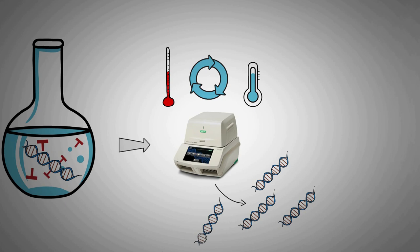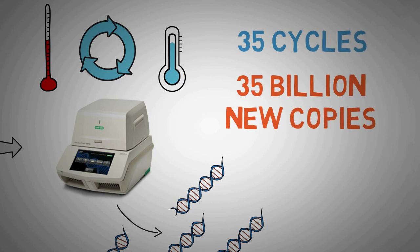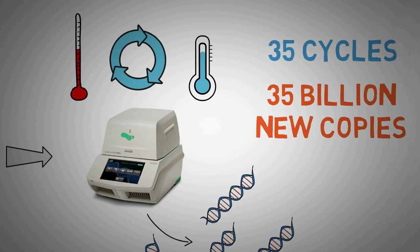Two copies become four, four copies become eight, and so on—the growth becomes exponential. A standard real-time PCR setup usually goes through 35 cycles, which means that by the end of the process, around 35 billion new copies of the sections of viral DNA are created from each strand of the virus present in the sample.